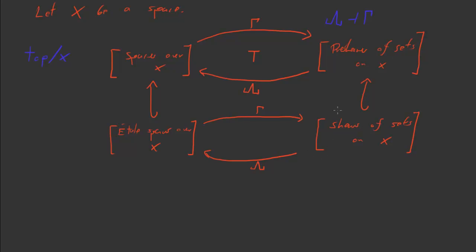Gamma and lambda will play nicely with these subcategories, in the sense that the diagram as I've just drawn it makes sense. If you start with an étale space and apply gamma, you'll actually get a sheaf of sets on X, rather than just some pre-sheaf of sets. And dually, if you start with a sheaf of sets and apply lambda, you're going to get an étale space, rather than just some random space over X. And furthermore, what we had as an adjunction up here, this is actually going to be an equivalence of categories.